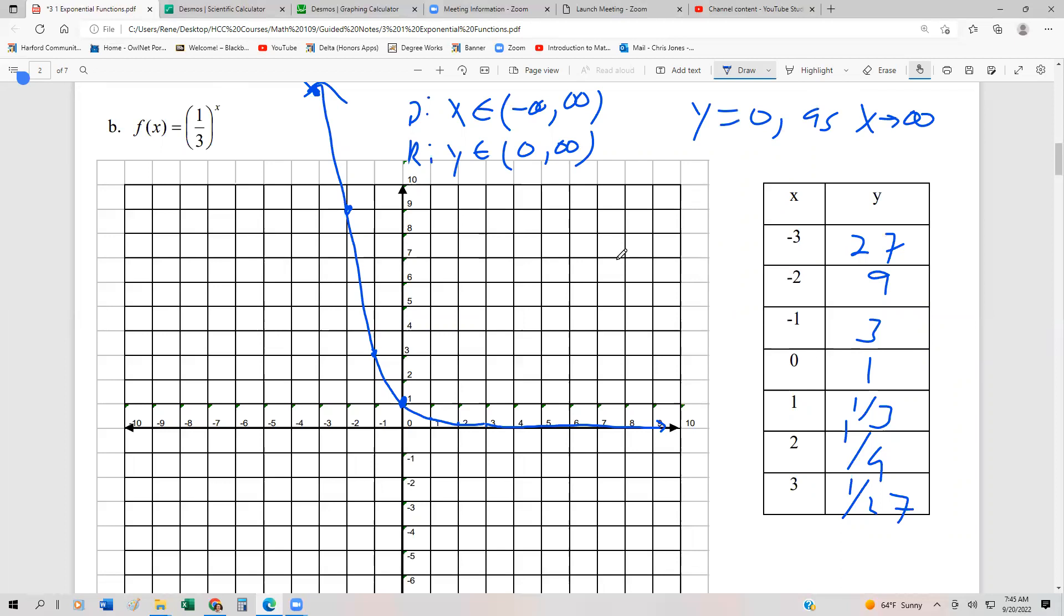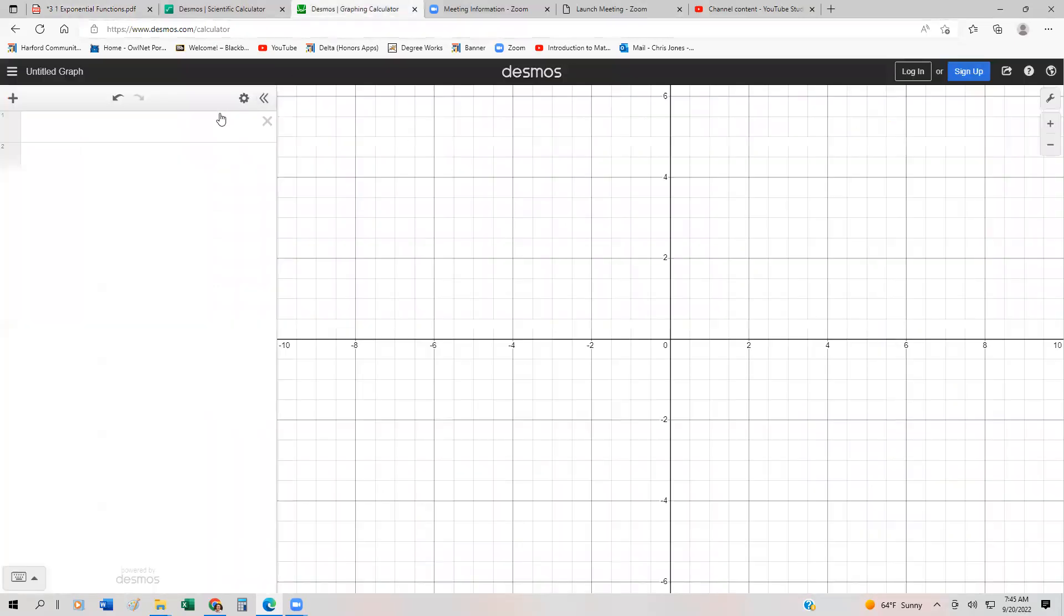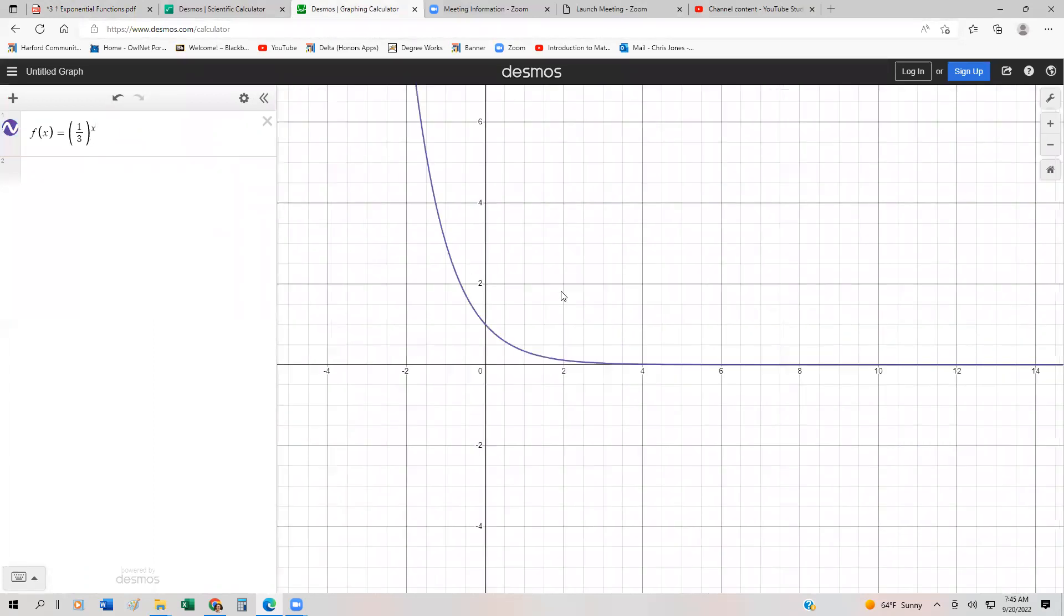Now, last thing we're going to do is let's go ahead and check this by using a graphing calculator. So we have f at x or y, doesn't matter. It's going to be equal to one third to the x. And then there's our function.